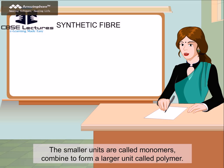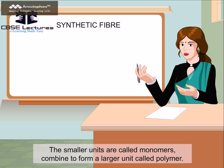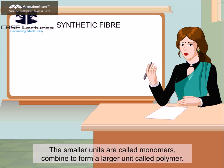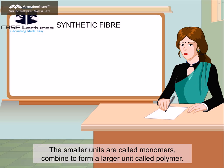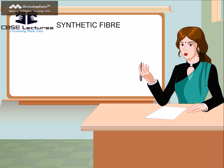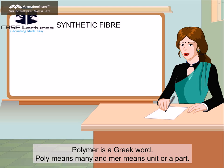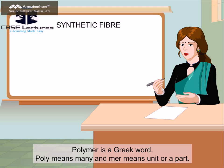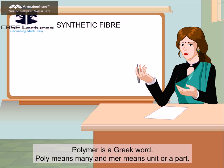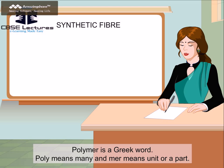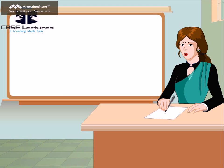a synthetic fiber is also formed by joining many small units which are all chemical substances. The smaller units are called monomers, combined to form a larger unit called polymer. Polymer is a Greek word. Poly means many and 'mer' means unit or a part.